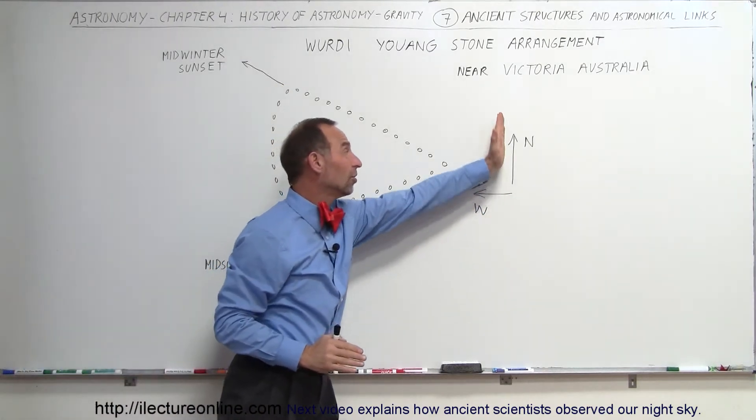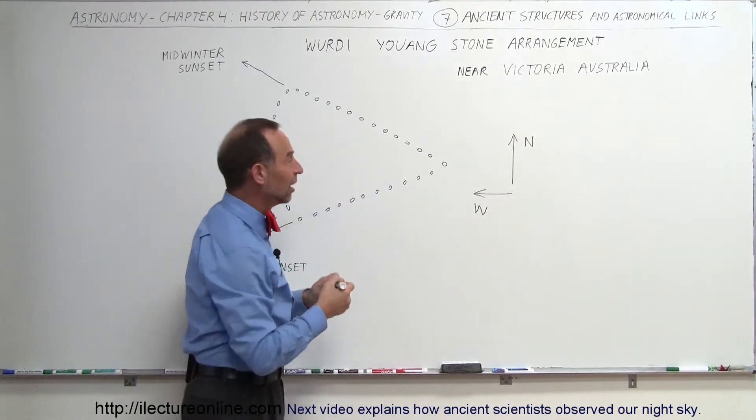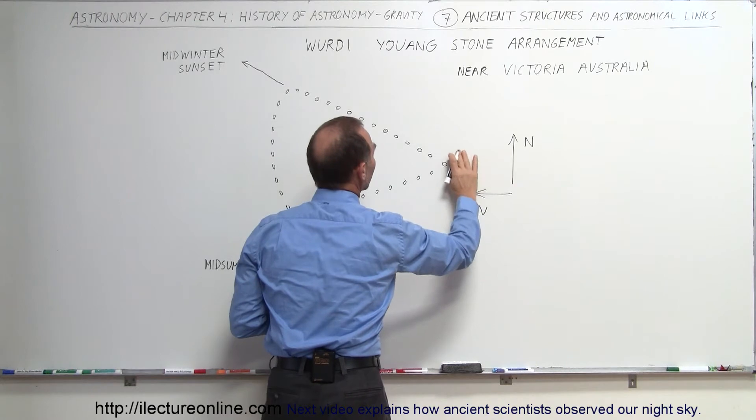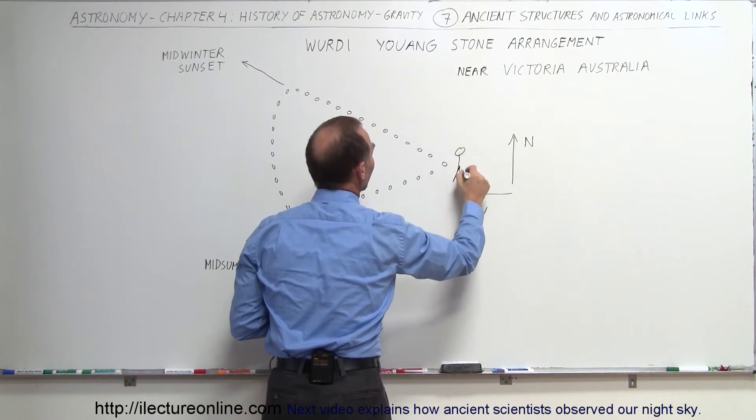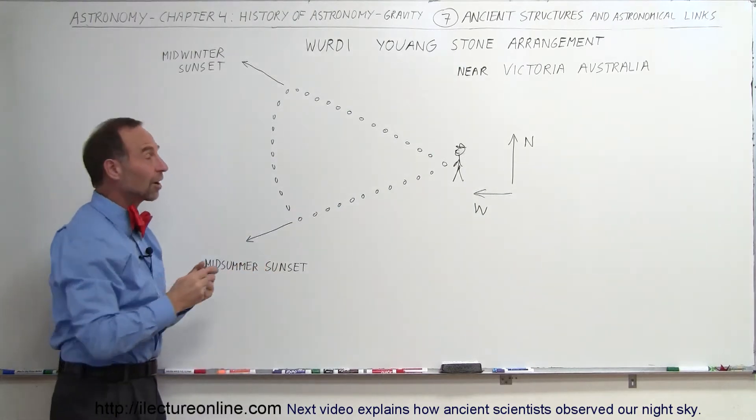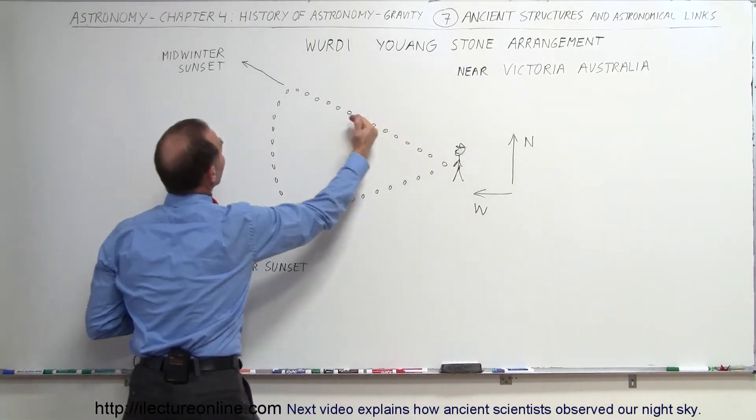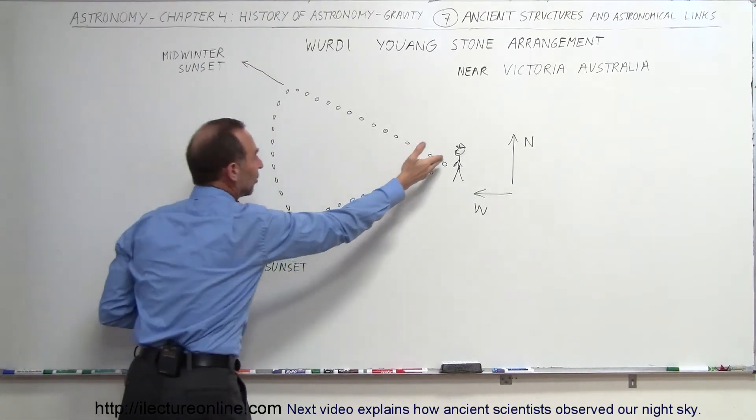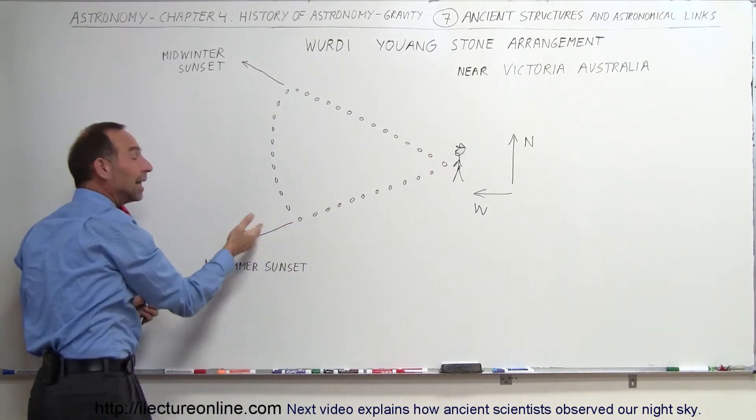It so turned out, noticing that north is in this direction, west is in this direction, if you would stand at the very tip of this arrangement right here—and let me try to draw that again, there we go, there's a person—and you're looking in various directions. If you look in this direction, that is where the sun would set at midwinter, and then if you look in this direction, that's where the sun would set at midsummer.